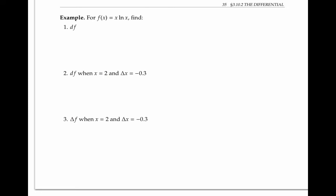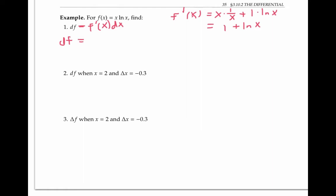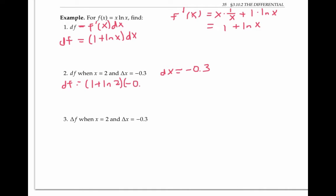Let's use the differential in an example. For the function f of x equals x times ln x, let's first find the differential df. We know that df is equal to f prime of x times dx. By the product rule, f prime of x is equal to x times the derivative of ln x, which is one over x, plus the derivative of x, which is one, times ln x — so in other words, one plus ln x. Therefore df is equal to one plus ln x times dx. When x equals two and delta x equals negative 0.3, we can just plug in those values and get df equals one plus ln of two times negative 0.3, which is approximately negative 0.5079.